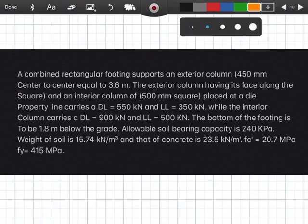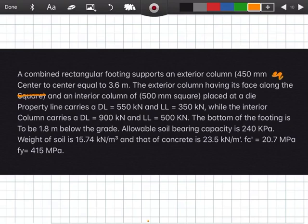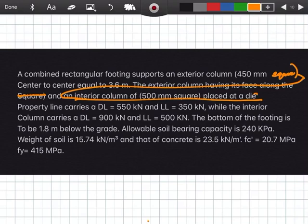A combined rectangular footing supports an exterior column 450 mm square and an interior column, placed at a distance center to center equal to 3.6 meters. The exterior column having its face along the property line carries a dead load of 550 and a live load of 350, while the interior column carries a dead load of 900 and live load of 500 kilonewton. The bottom of the footing is to be 1.8 meter below the grade. Allowable soil bearing capacity is 240 kilopascal. Weight of soil is 15.74 kilonewton per meter cube and that of concrete is 23.5 kilonewton per meter cube. F prime C is equal to 20.7 megapascal and FY is 415 megapascal.